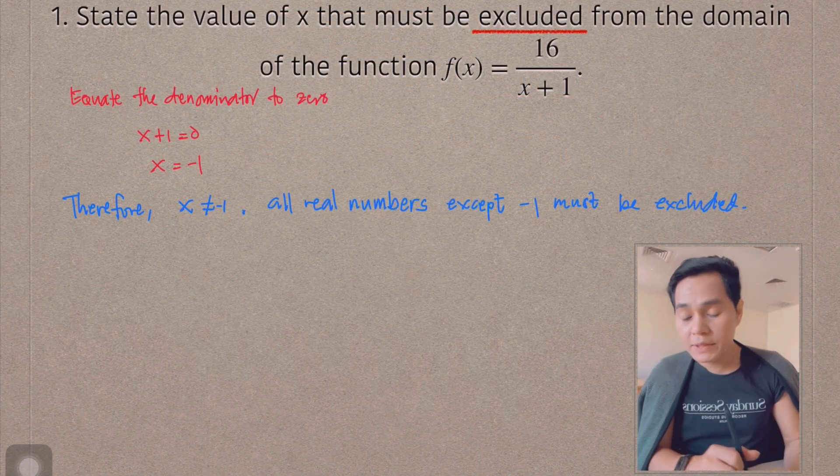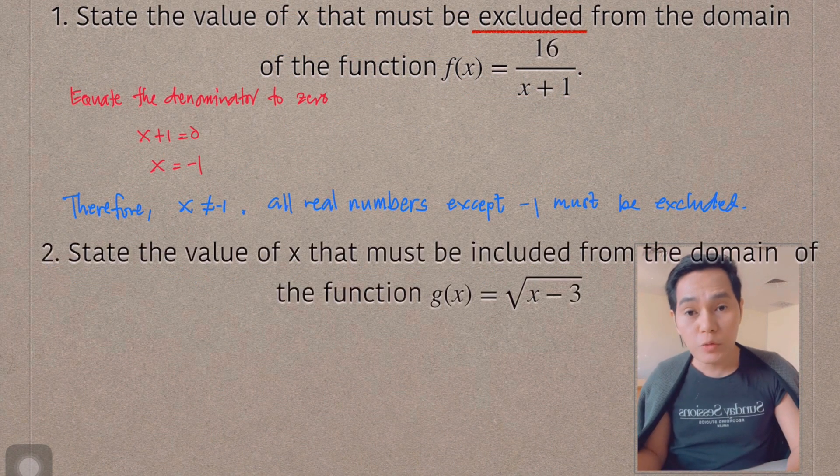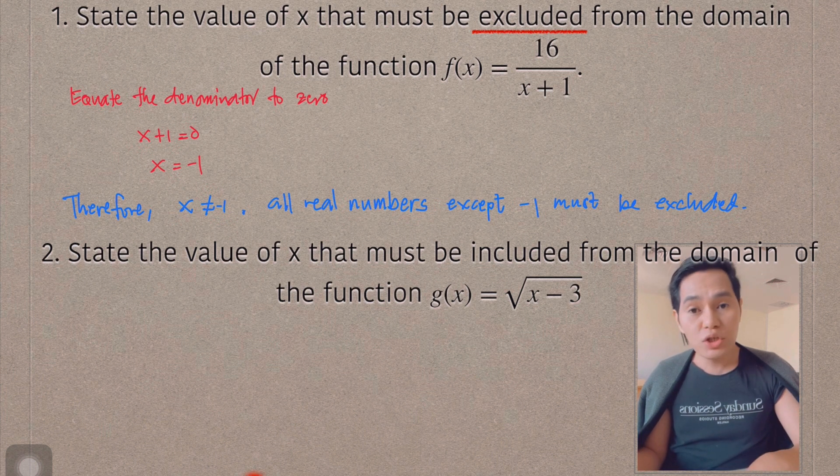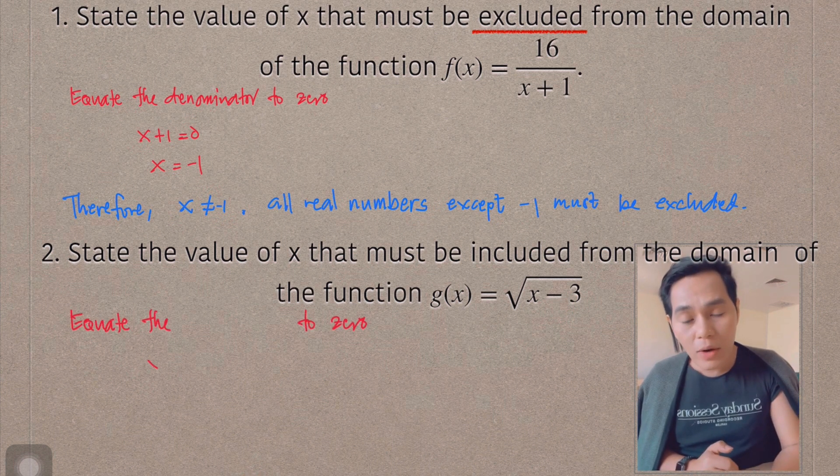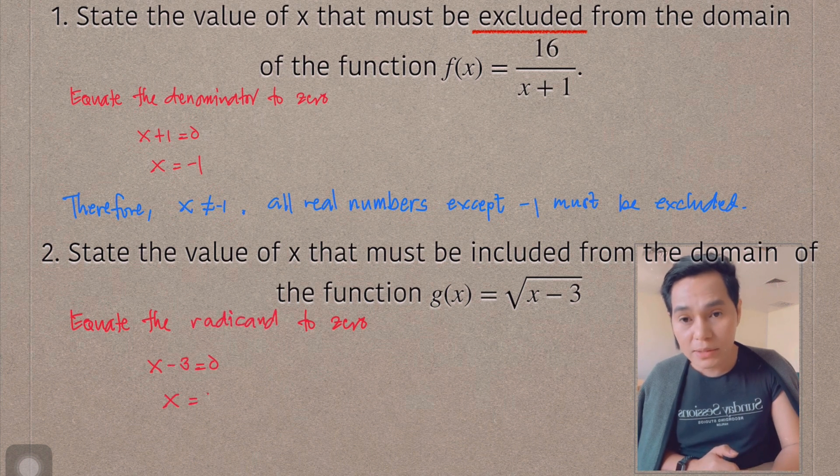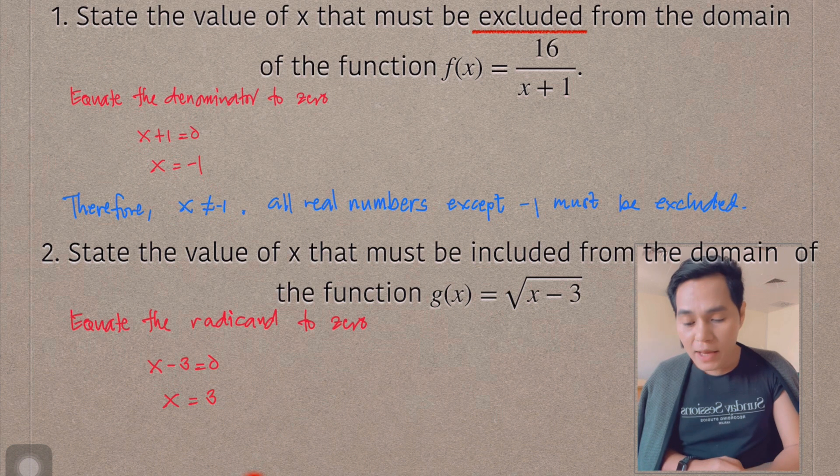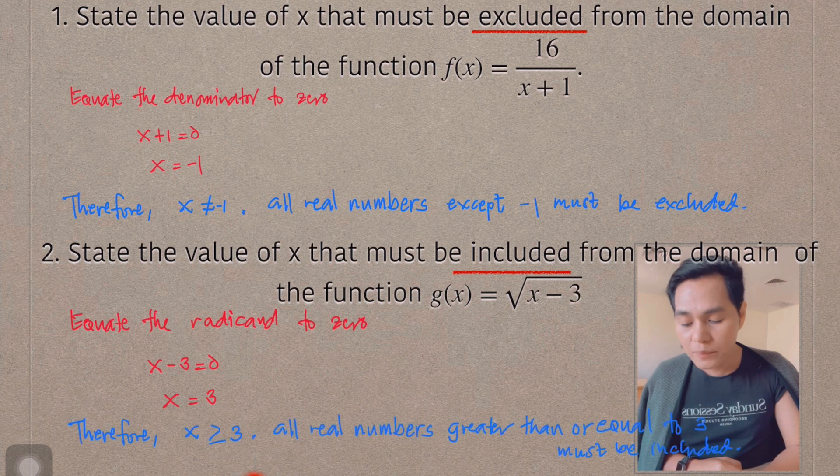Up next, problem number two. State the value of x that must be included from the domain of the function. g(x) is equal to the square root of x minus 3. So how we can solve the problem, just simply equate this time the radicand. What is the radicand? The one inside the radical sign, which is x minus 3, equate it to 0. So you have there x is equal to 3. And then, how will you answer the question here, which must be included?